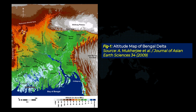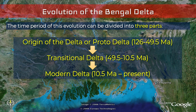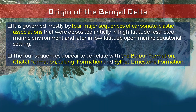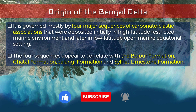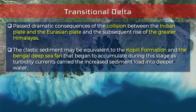We can divide the evolutionary process into three steps: the origin of the delta or proto-delta, the transitional delta, and the modern delta. In the proto-delta stage, deposition of sediments occurred in a marine environment, and the Bolpur Formation, Gatal Formation, Jalangi Formation, and Sylhet Limestone Formation were formed. This process began after the collision between the plates, when the Bengal deep-sea fan began to accumulate due to increased sediment load carried by turbidity currents.